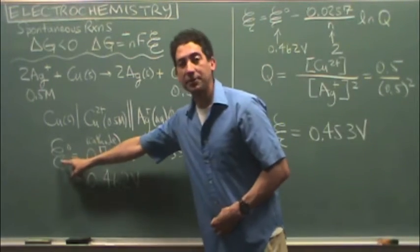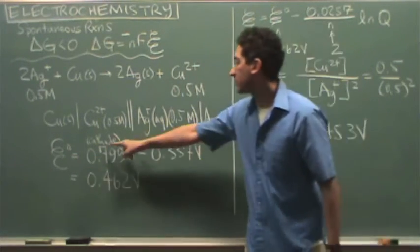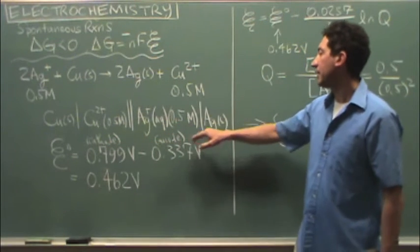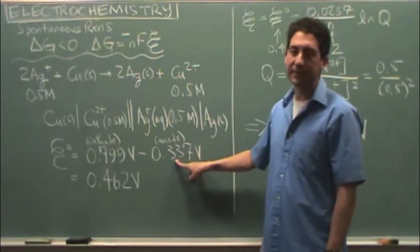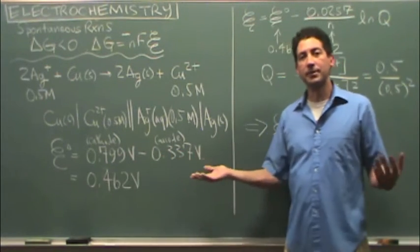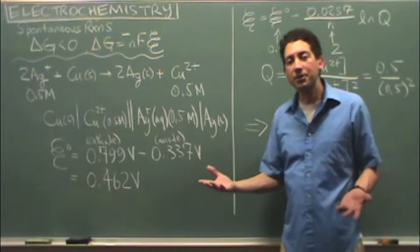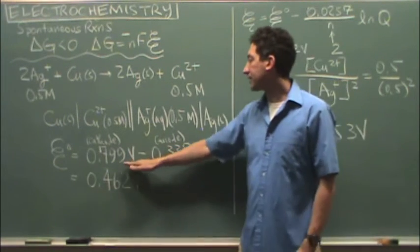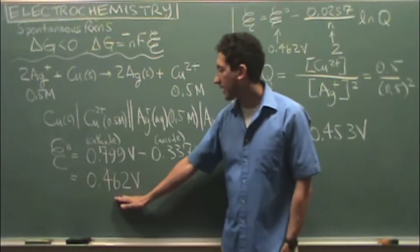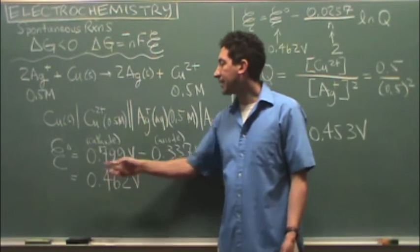So to get the E standard, the standard potential, you always go cathode minus anode. That's this cathode value minus this anode value. You might be wondering, where did I find these values? You can look them up in a table in your book, use Google, whatever. These are just values that you can find. I subtract those and then I get 0.462. So that's my E standard.